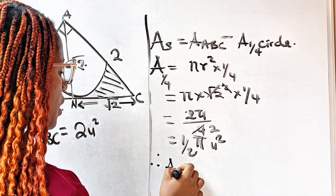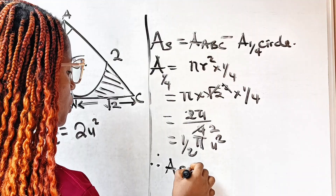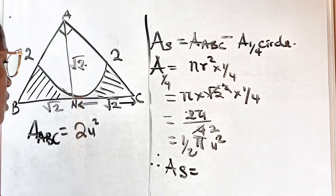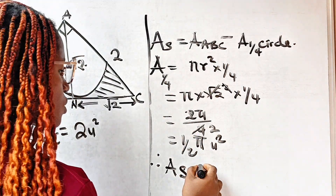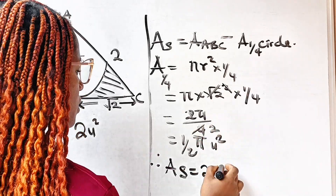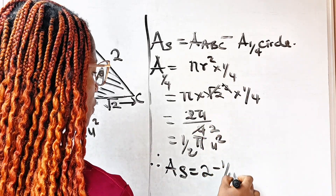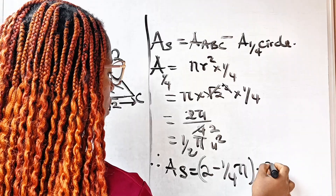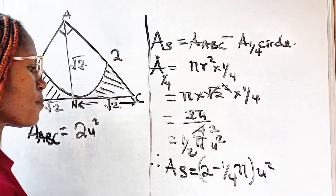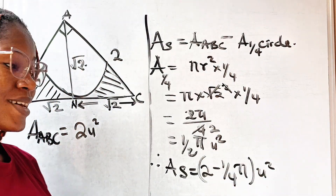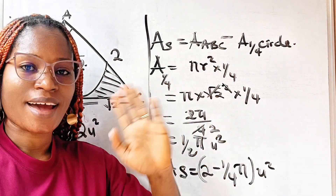Therefore, the area of the shaded region is equal to 2 minus the area of the quarter circle, which is one quarter π — all in units squared. Thank you for watching. See you in my next video. Bye.